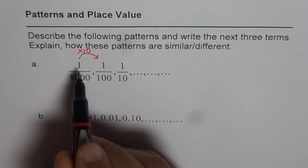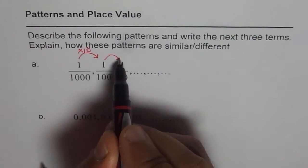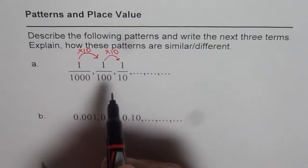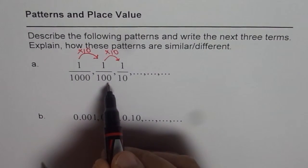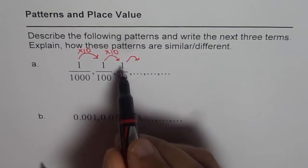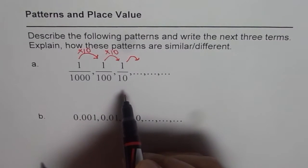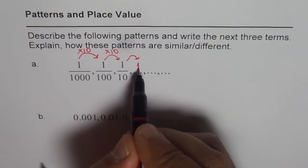When I do times 10, I get 1/100 from 1/1000 and then again I do times 10 to get 1/10 from 1/100. So the next number should be times 10 of 1/10. That is 10 over 10. So what is 10 over 10? 10 over 10 is number 1.